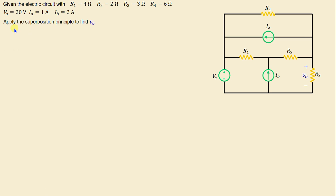Let's move on to the solution. First, we begin by identifying each independent source in this circuit. This step provides a clear understanding of the sources that will be analyzed separately. In this circuit we can observe three independent sources: one independent voltage source Vs, and two independent current sources Ia and Ib.